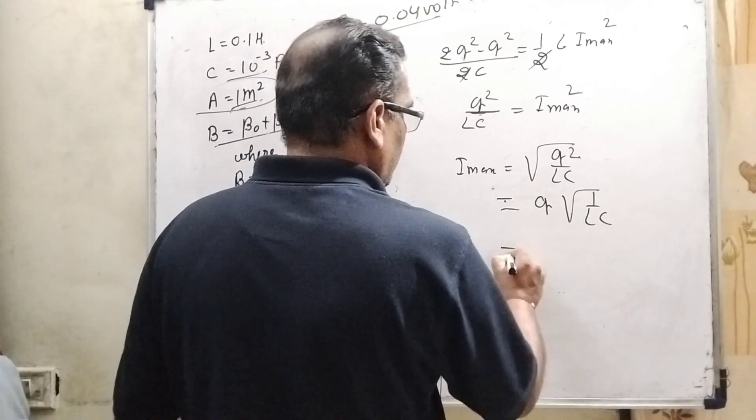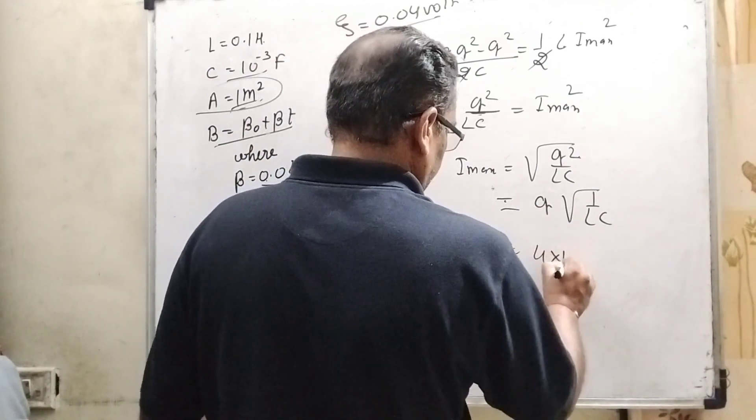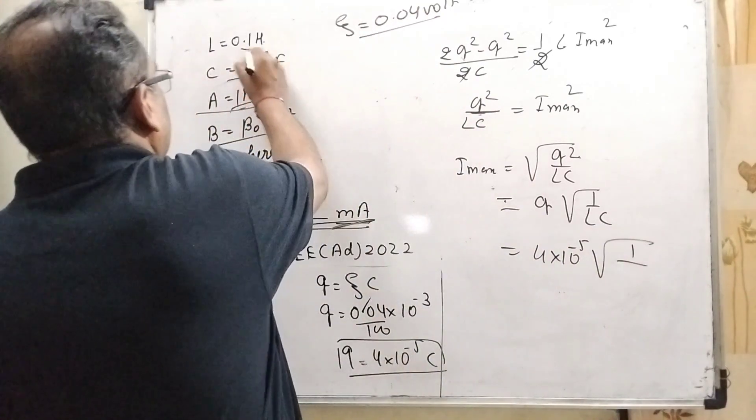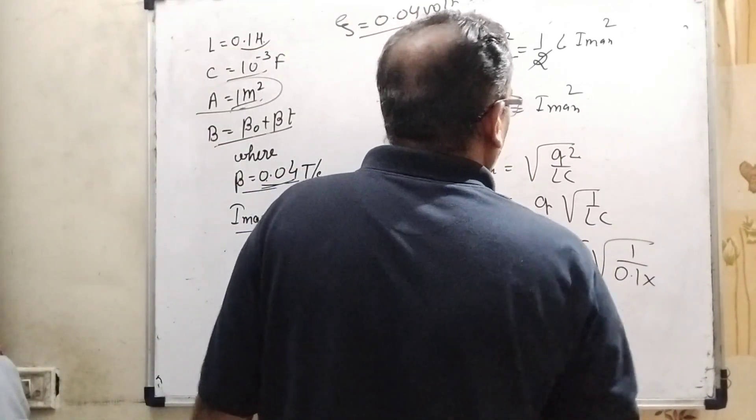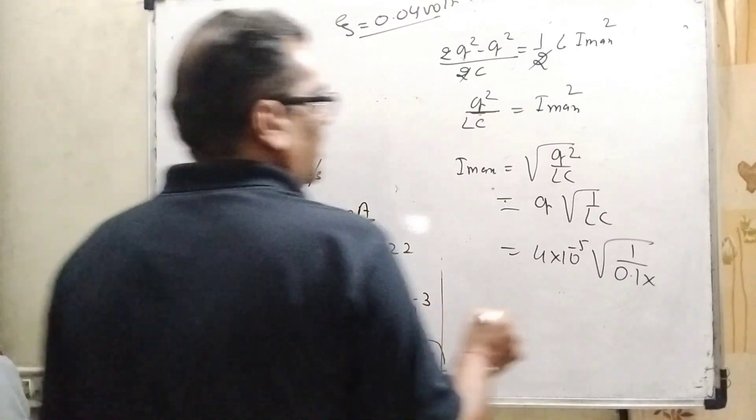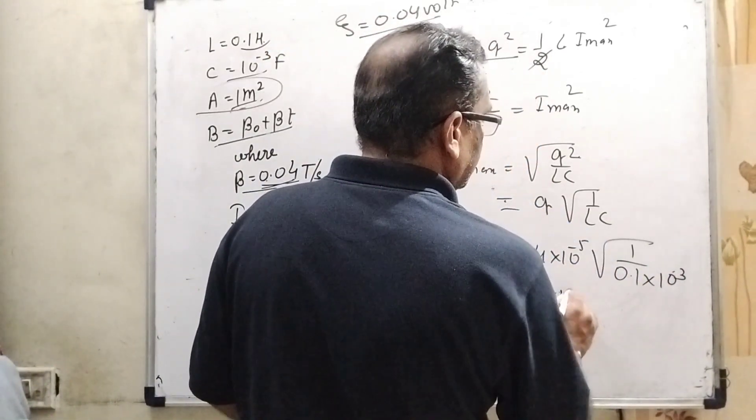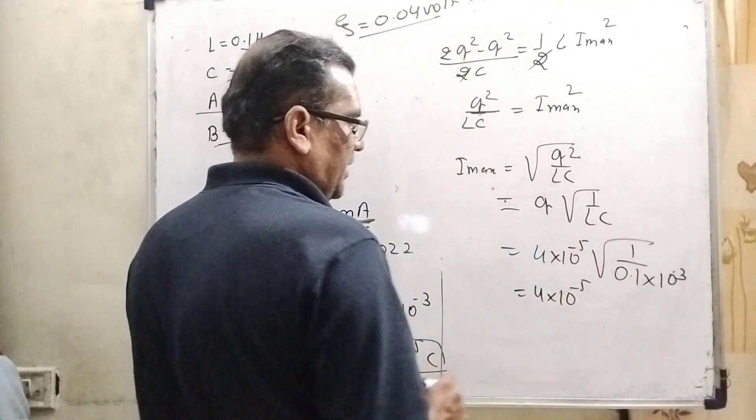What is the value of charge? That is 4 into 10 raised to power minus 5. What is the value of inductance? Here 0.1 Henry. And what is the capacitance? 10 raised to power minus 3.